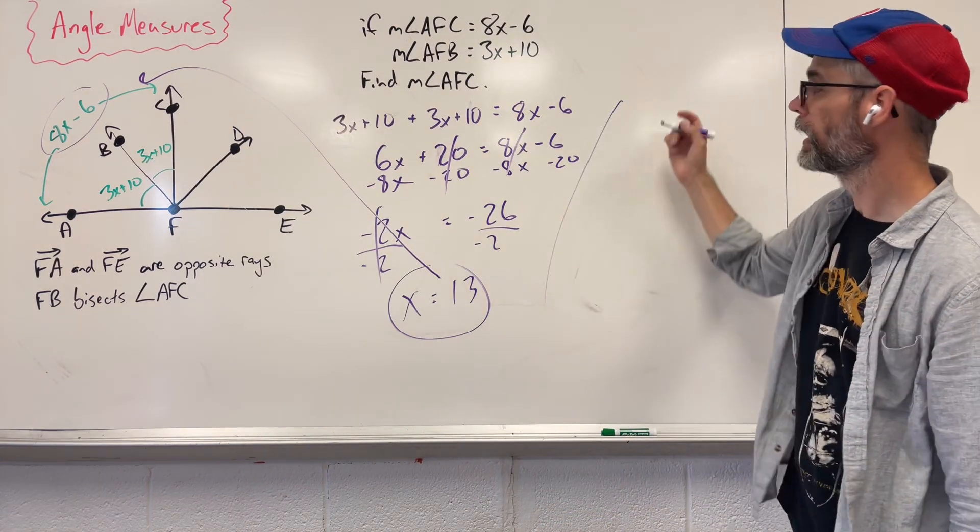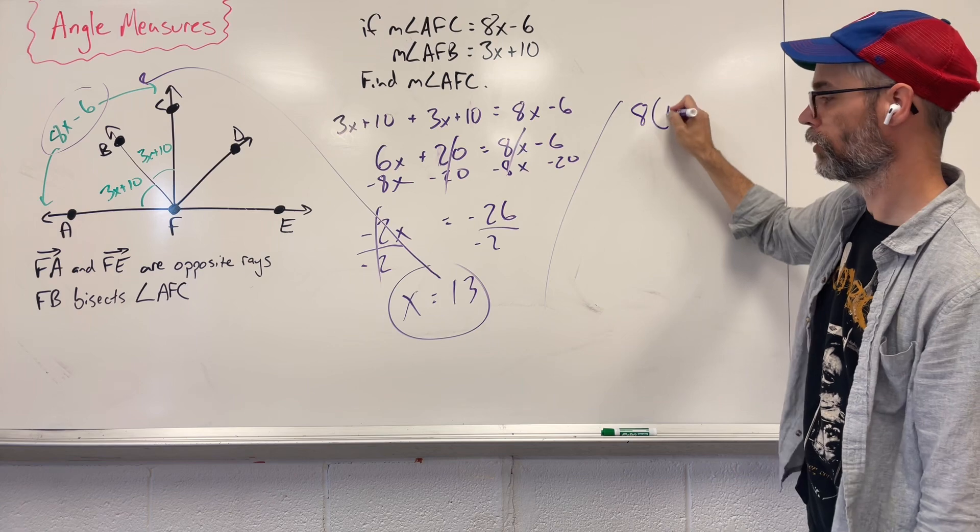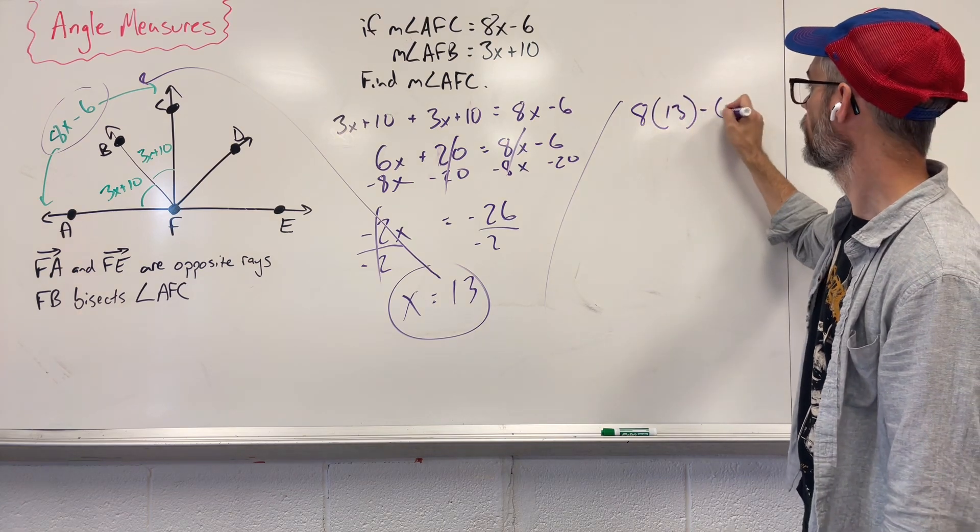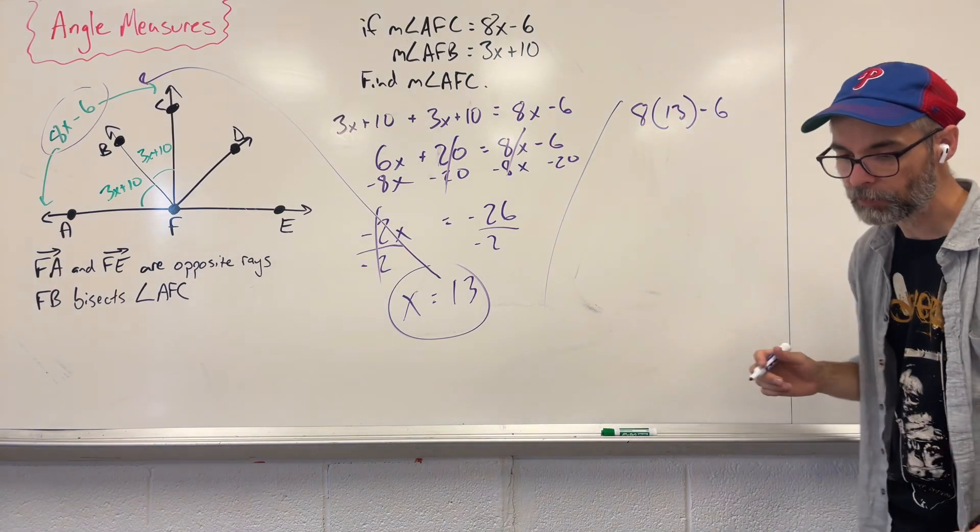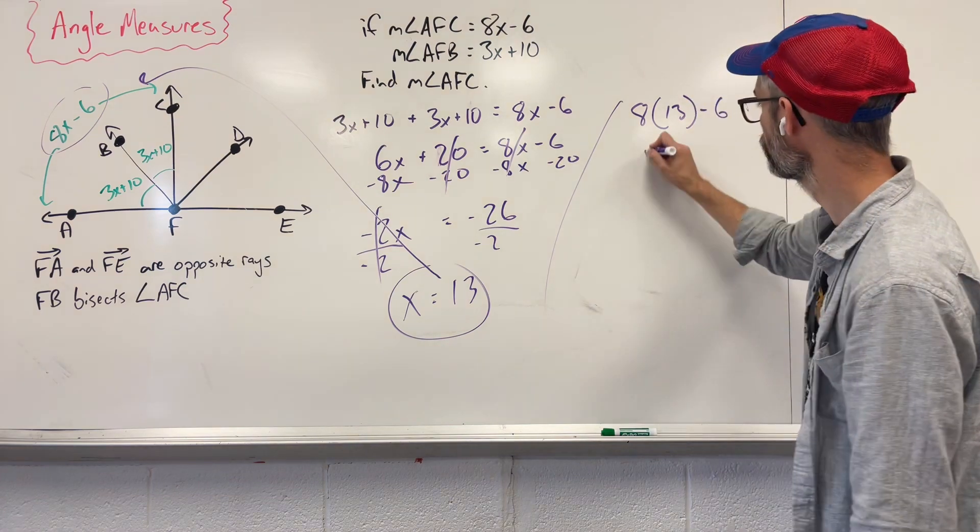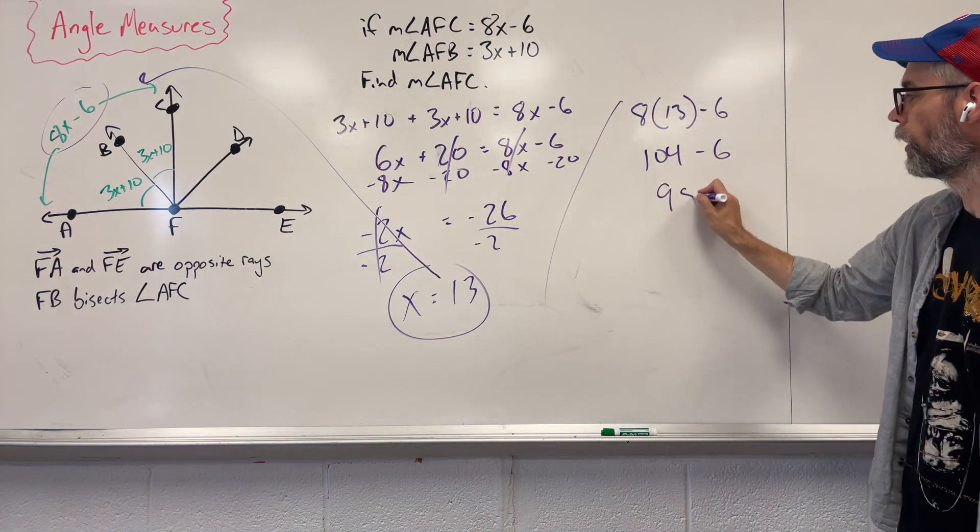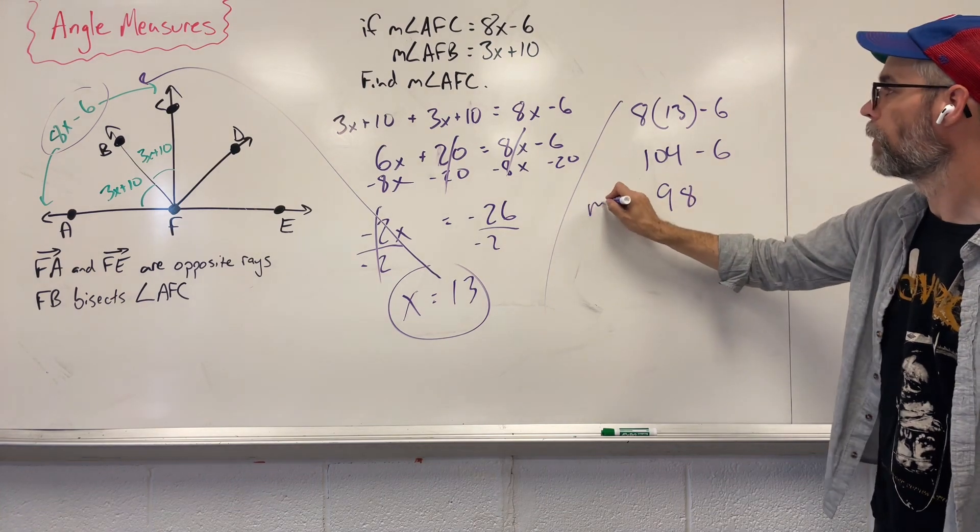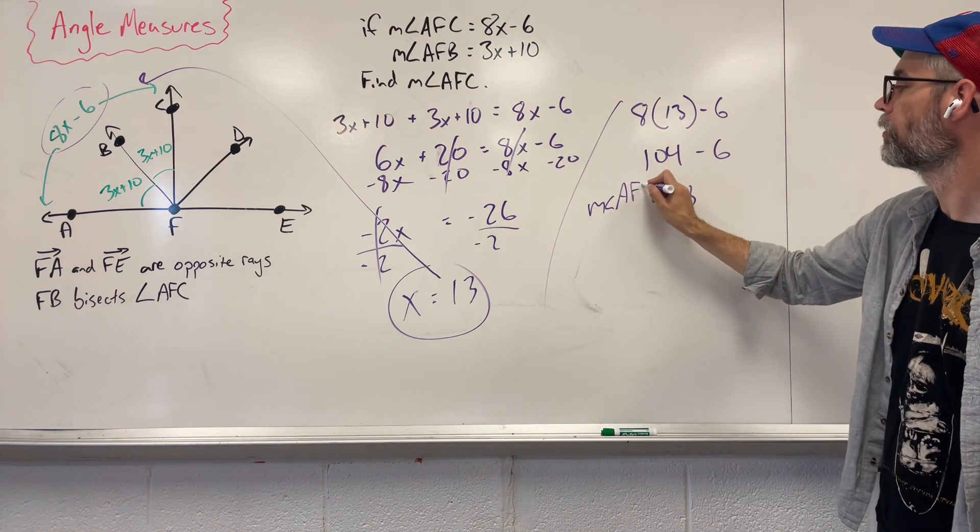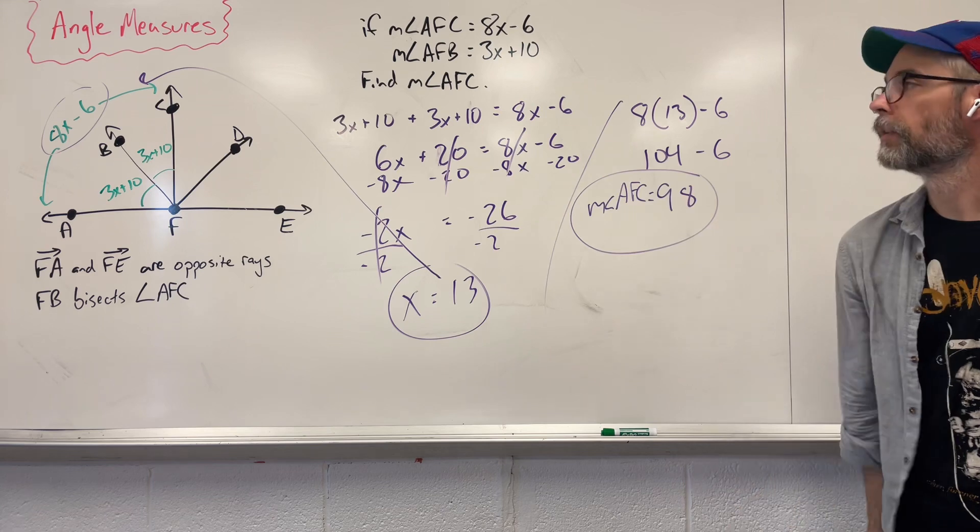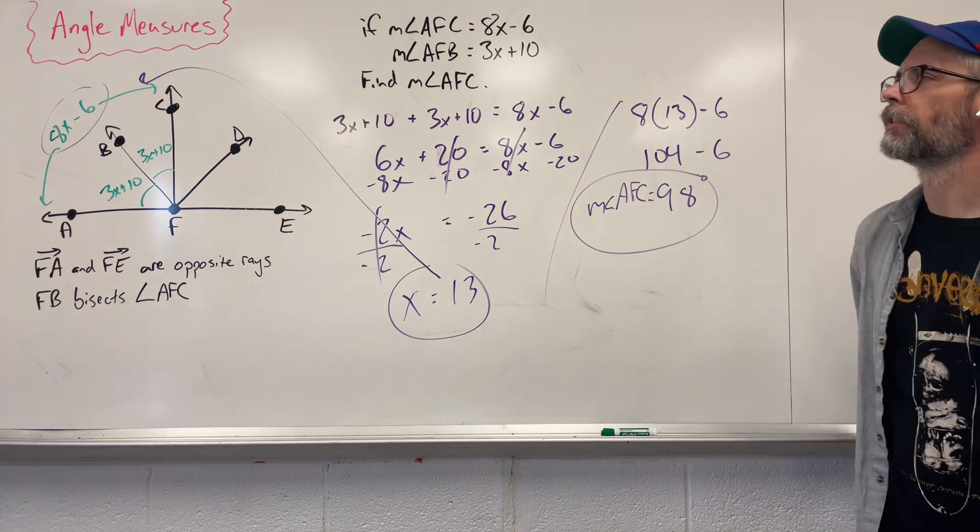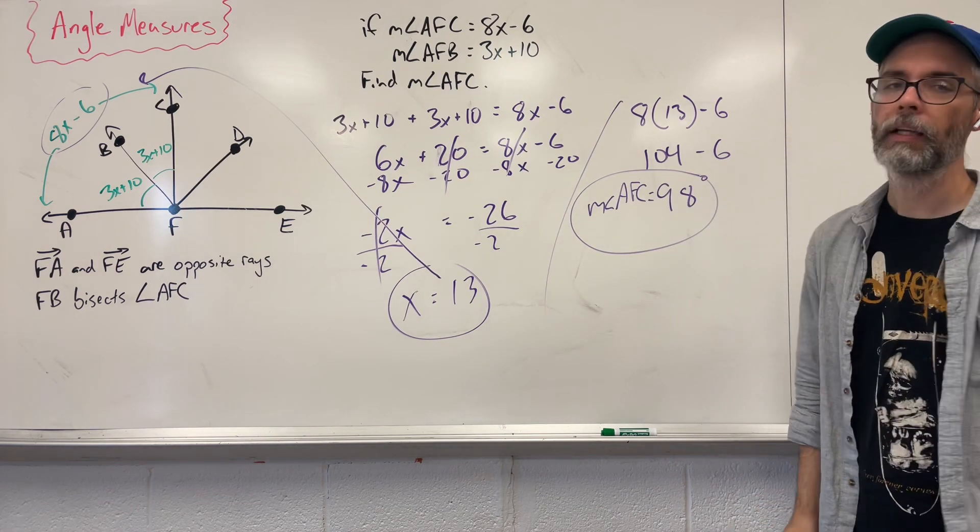So now we get 8 times 13 minus 6. So 8 times 13 is going to give us 104. We subtract 6 and we're left with 98. So the measure of angle AFC is 98 degrees. And that's finding angle measures.